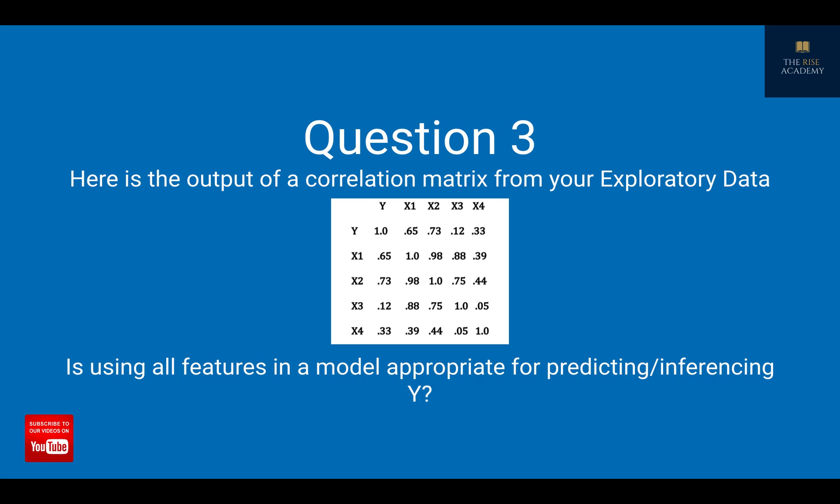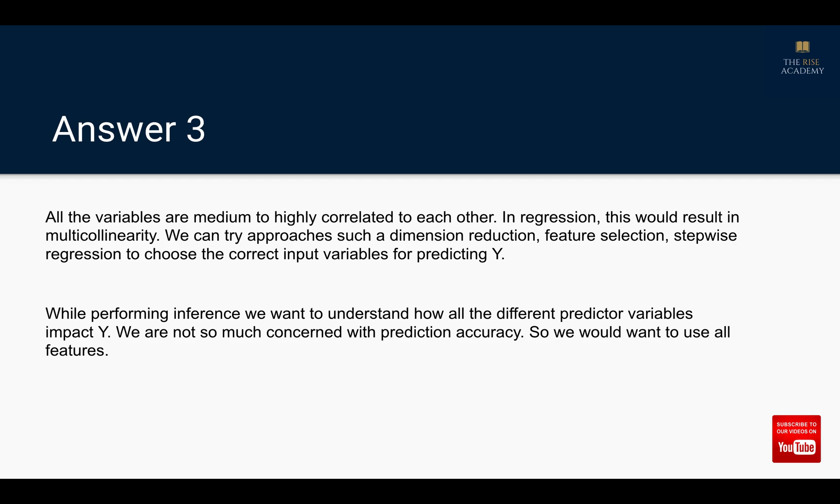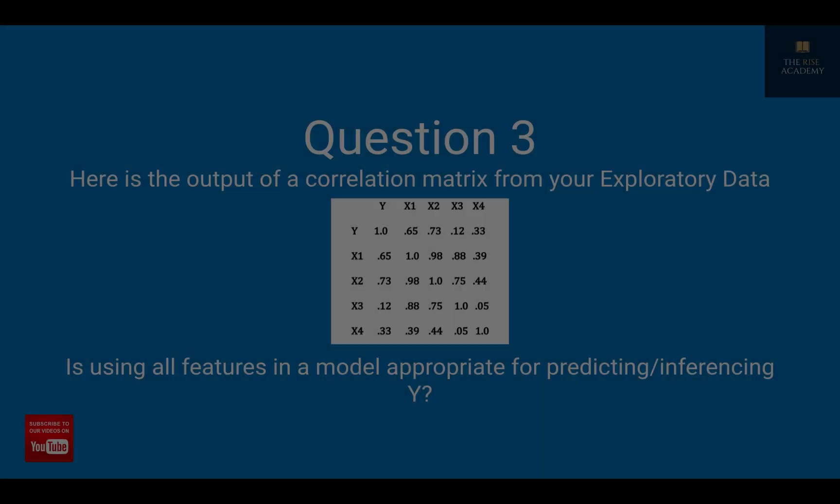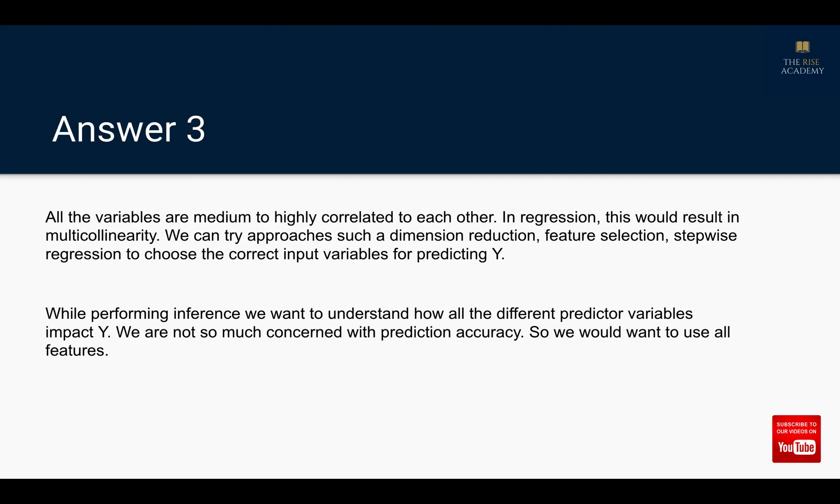The second part asks if we should use all input variables for inferencing Y. My answer for the first part is no, because they are really highly correlated to each other, so there is going to be the issue of multicollinearity. To avoid multicollinearity, we should follow different approaches such as dimension reduction, feature selection, stepwise regression, and try to remove the multicollinearity before we build our model.